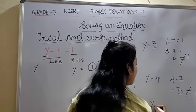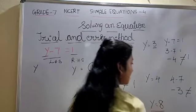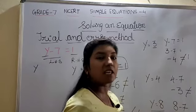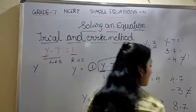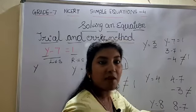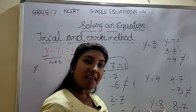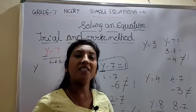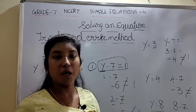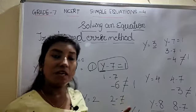Which value will give 1? If we take y as 8: 8 minus 7 gives 1, and 1 equals to 1. Now our LHS and RHS are the same. The value of the unknown variable is y equals 8. In this way, we can solve an equation using trial and error method, but always prefer simpler methods unless the question specifies this method.